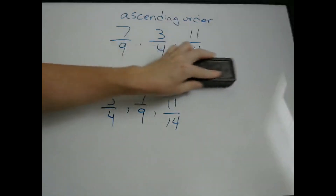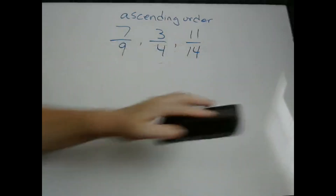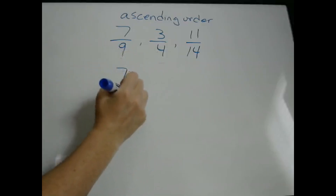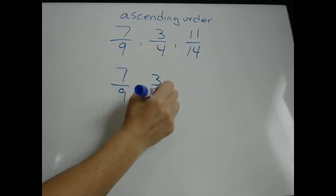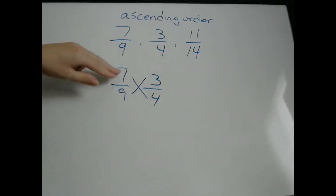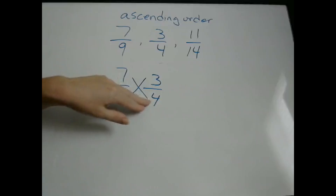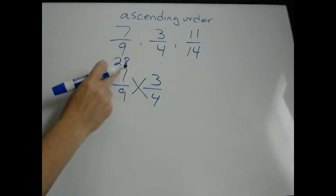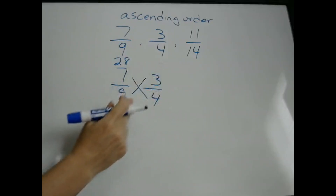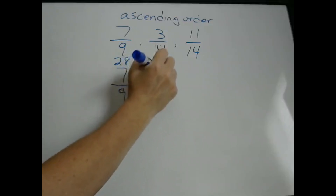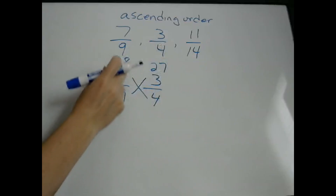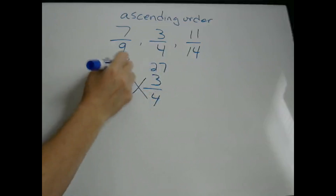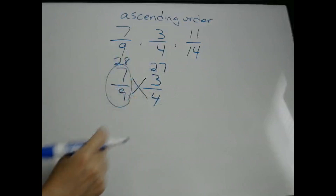Another way that you can compare fractions is by what we call cross-multiplying. For example, we can compare 7 ninths and 3 fourths by cross-multiplying. That means we take the top number times the other fraction's bottom number, so 7 times 4 is 28 — we write it above the top number. Then we take 3 times 9, which is 27, and write it above that top number. We just compare these two numbers: 28 is bigger than 27, so 7 ninths is bigger than 3 fourths.